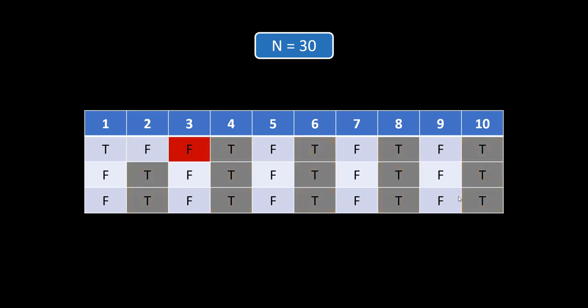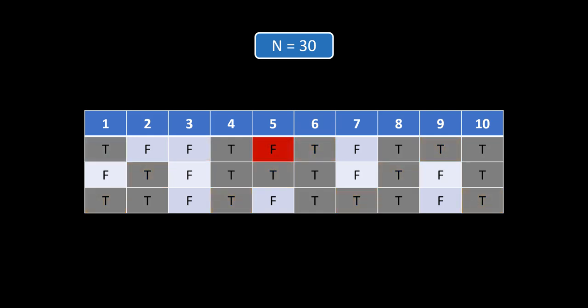Now we move to 3. Since 3 is still false, it is a prime, and we mark all its multiples as composite. The multiples of 3 are 6, 9, 12, 15, 18, and so on — we mark those as true. Then we move to the next number with value false. Since 4 is divisible by 2 and 1, it is already true, so we move on to 5 and mark all its multiples as true.